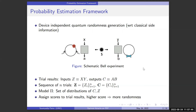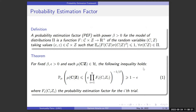What the Probability Estimation Framework primarily does is assign scores to trial results — higher scores imply more randomness. This is in spirit of the entropy accumulation framework, in the sense that trial-wise estimates accumulate multiplicatively, and we estimate the conditional probability of the sequence of outcomes conditioned on inputs. More formally, a PEF with positive power is a non-negative function of inputs and outputs modeled as random variables taking values in alphabet c and z, such that a certain expectation condition is satisfied for all distributions in the model.